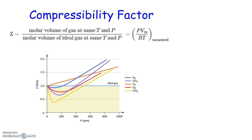One way to look at the deviation from ideal gas is to look at what is called the compressibility factor, which is labeled Z.